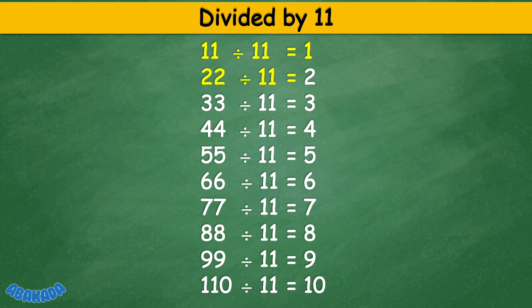Divided by 11: 11 divided by 11 equals 1, 22 divided by 11 equals 2, 33 divided by 11 equals 3, 44 divided by 11 equals 4, 55 divided by 11 equals 5, 66 divided by 11 equals 6, 77 divided by 11 equals 7, 88 divided by 11 equals 8.